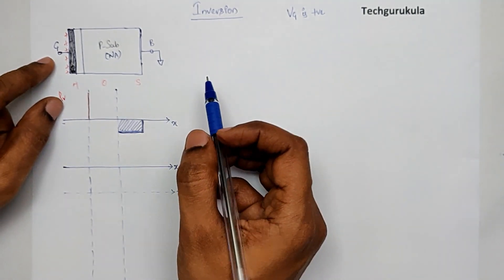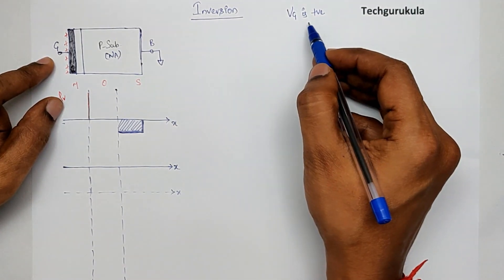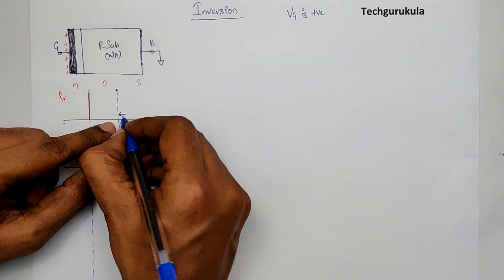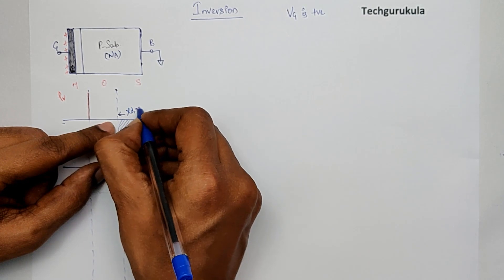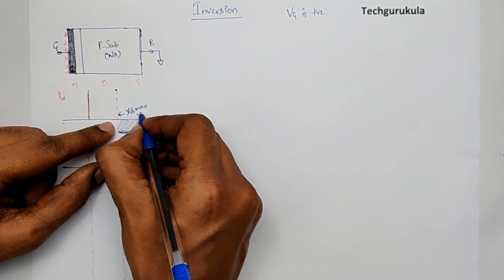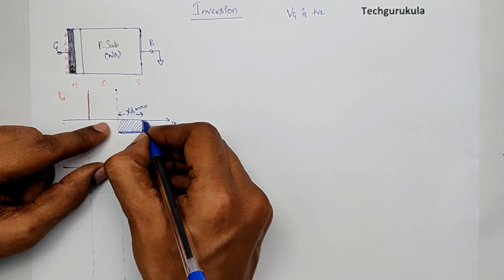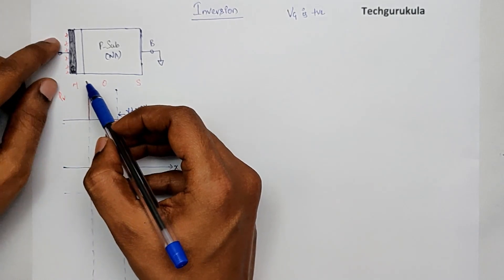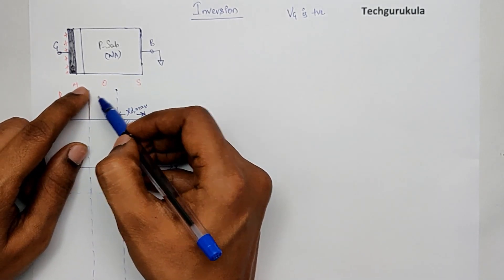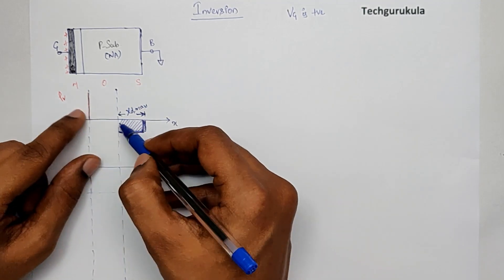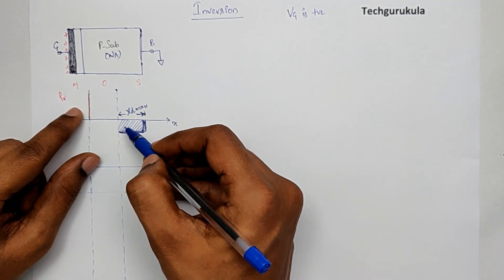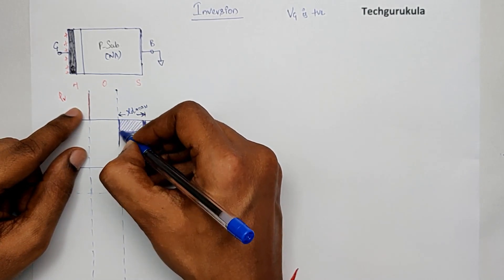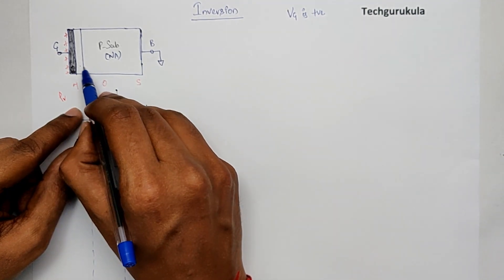From depletion, as we keep increasing Vg, we will reach a point where the depletion region increases to a maximum value, which is XD_max, after which it stops increasing anymore. When we further increase the gate potential, the gate charge would increase — but how is the charge compensated? It is equated with an inversion charge, which is because of electrons near the silicon dioxide–silicon surface.